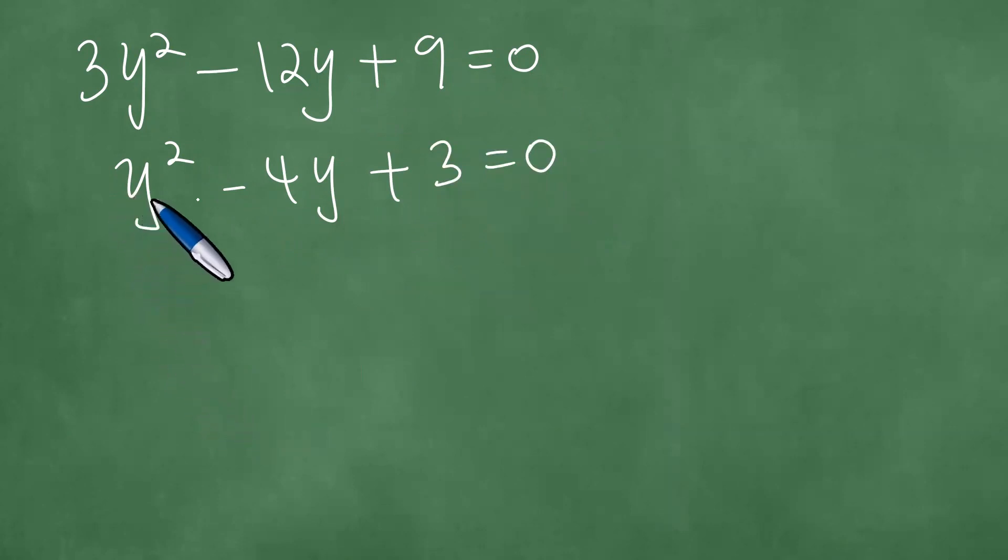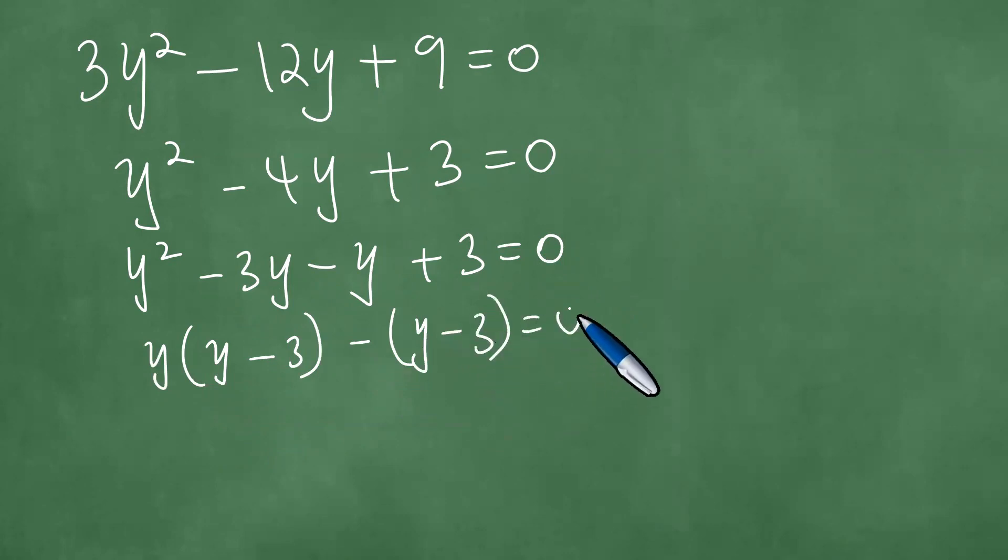Dividing both left and right by 3 means you have y squared minus 4y plus 3 equals 0. We look for two expressions whose product is 3y squared, but whose summation is minus 4y, and those are exactly minus 3y and minus y. Factor out y, and we have y minus 3 here. Factor out, and then you have y minus 3 here. So y minus 3 is a common factor, and this is y minus 1. This means y equals 3 or y equals 1.